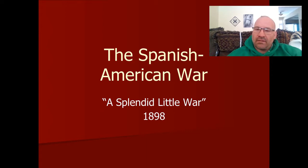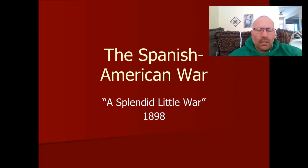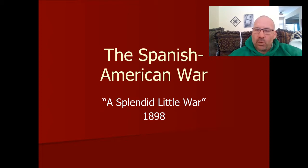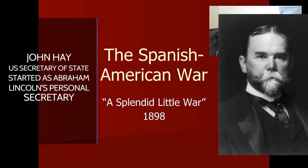We've looked at some of the things the United States did, like the annexation of Hawaii and the construction of the Panama Canal. Here's another leg on that tripod: the Spanish-American War, which is seemingly rather random. How does the United States get into a war with Spain when the farewell address of George Washington said we're only going to get involved in wars that are direct threats to American security? It was a war that Secretary of State John Hay referred to as a splendid little war.